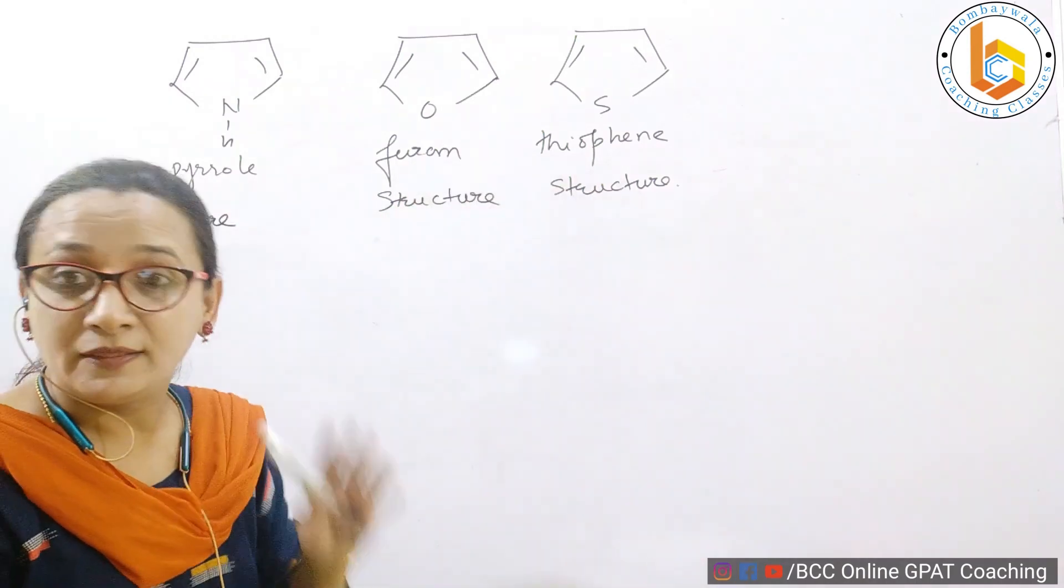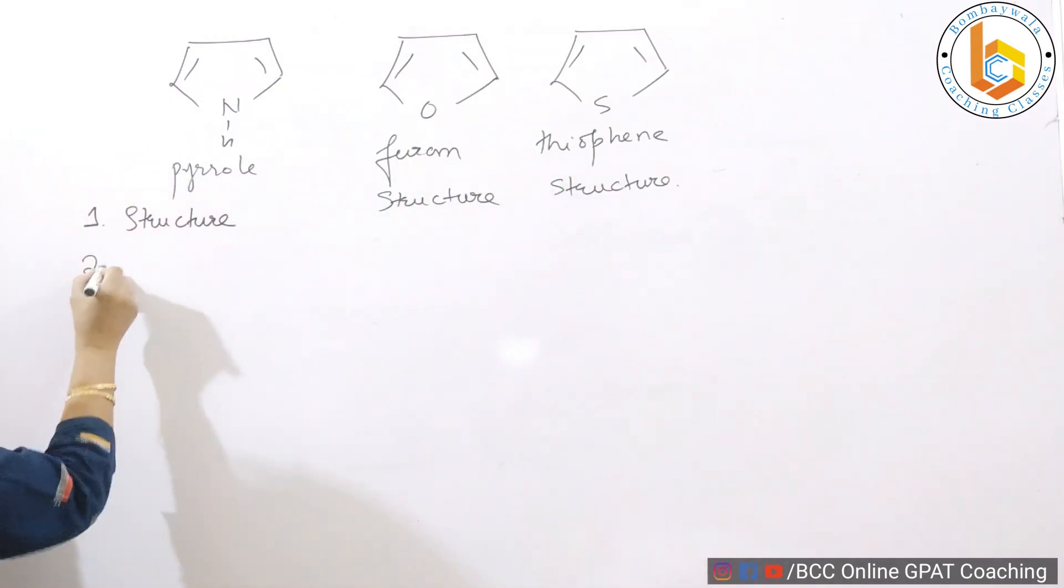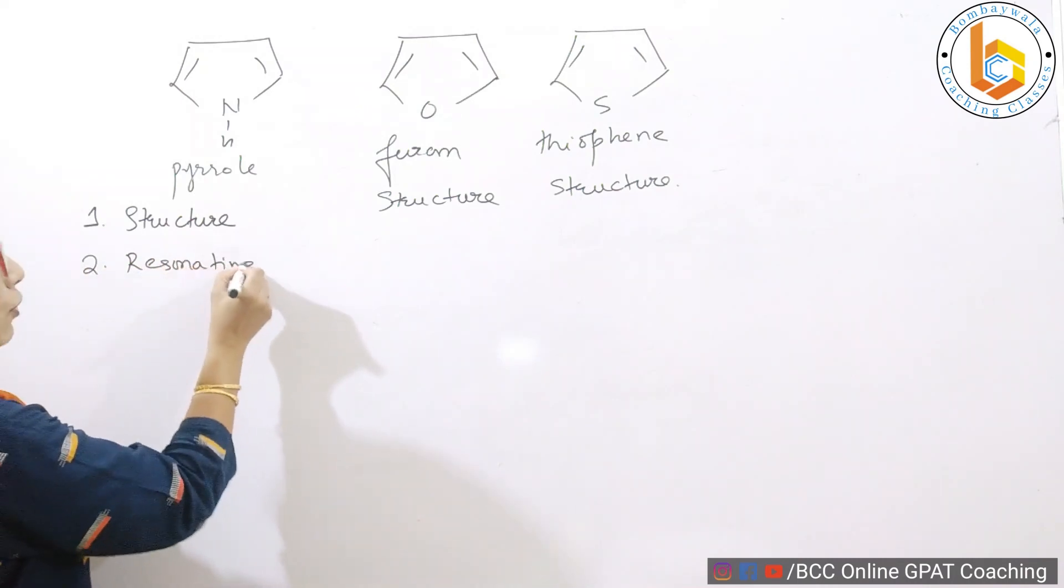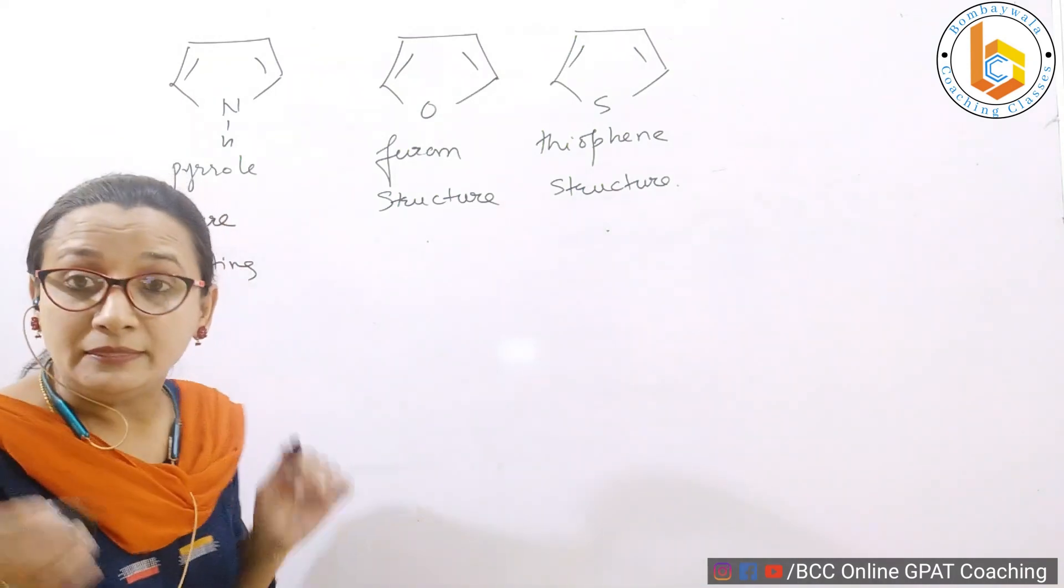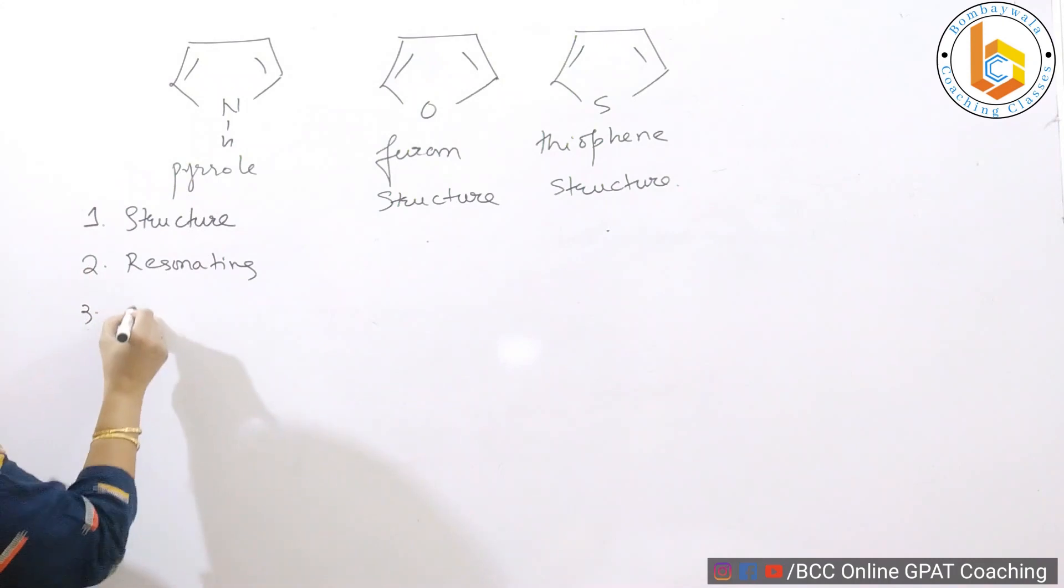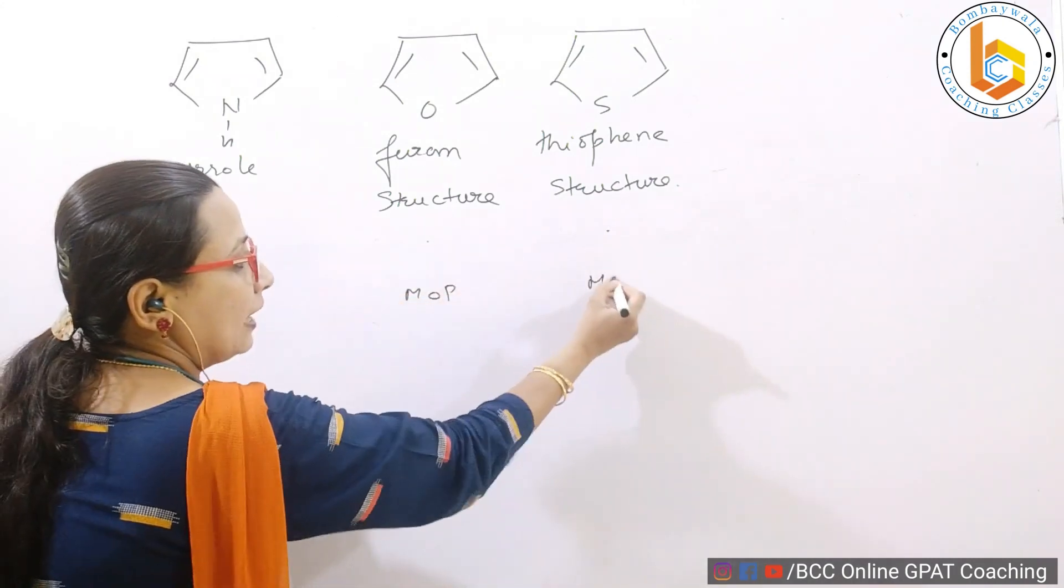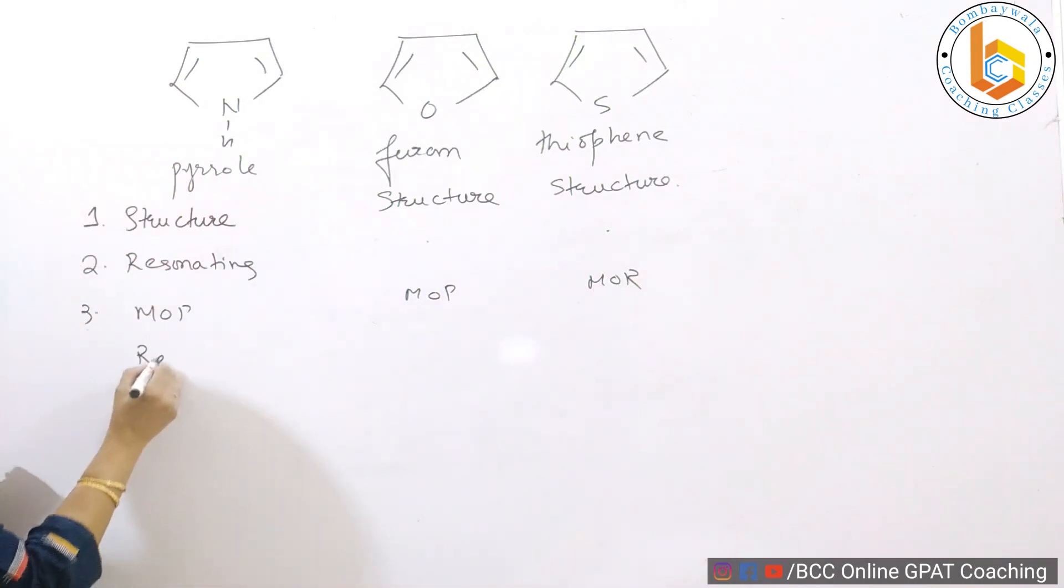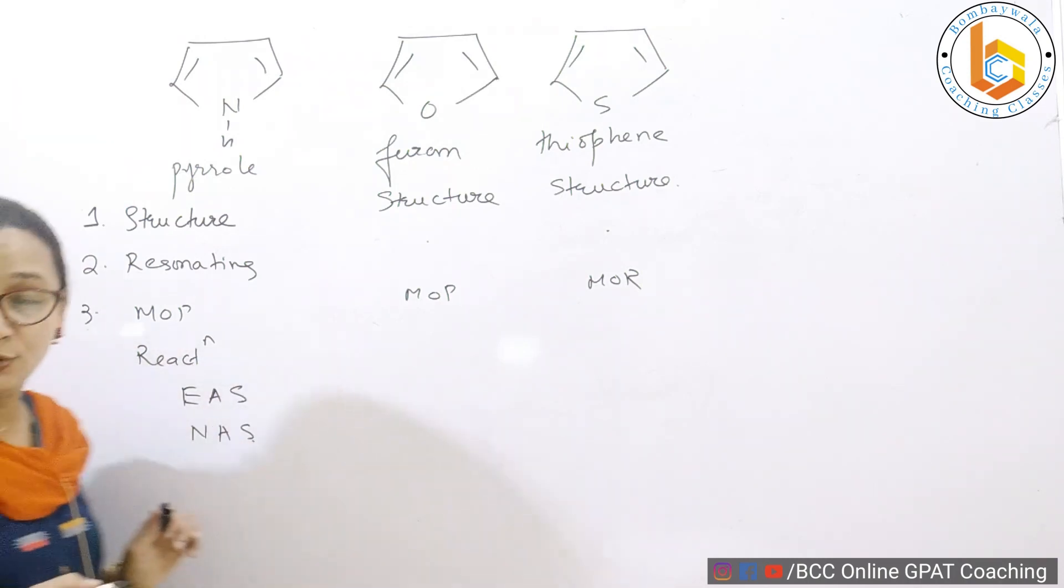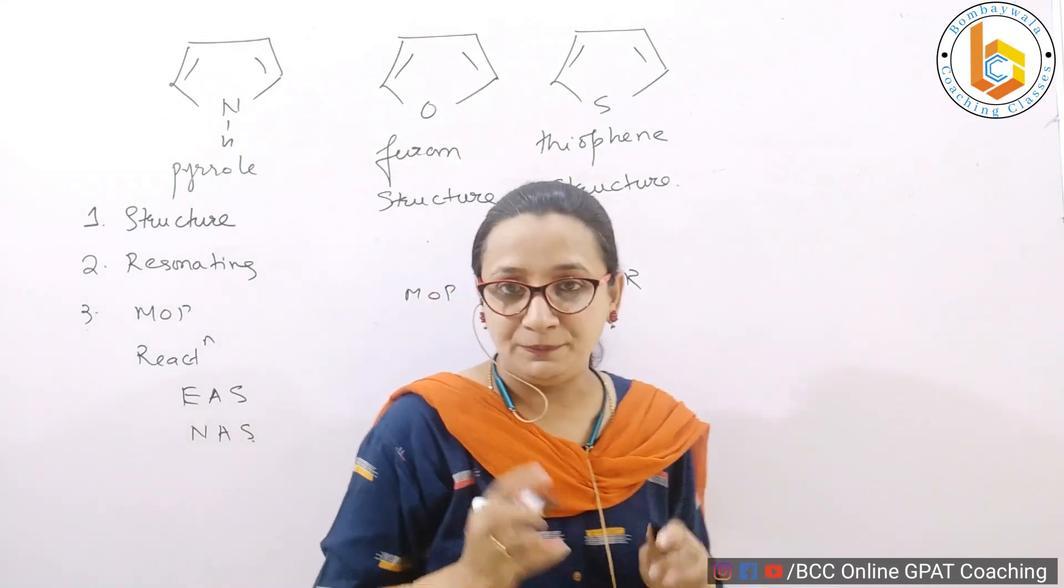Then we will be seeing the resonating forms for all of them, then we would see the methods of preparation for all of them, and finally we will see the reactions for all of them - like, for example, electrophilic aromatic substitution and nucleophilic aromatic substitution, jab jab hoga tab tab. Thik hai?